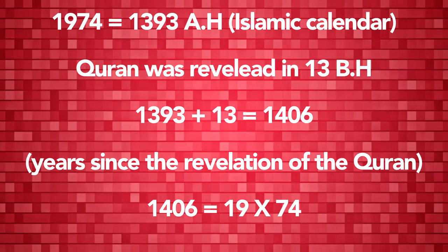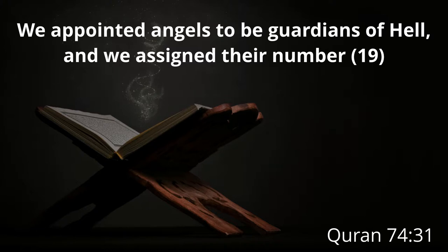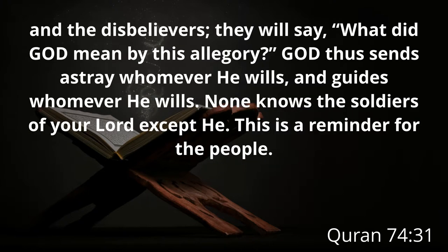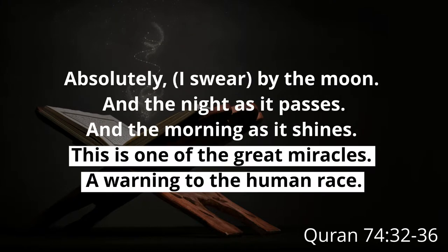God tells us in 74:31: 'We appointed angels to be guardians of hell and we assigned their number 19.' Then five reasons are given: (1) to disturb the disbelievers; (2) to convince the Christians and Jews that this is the divine scripture; (3) to strengthen the faith of the faithful; (4) to remove all traces of doubt from the hearts of Christians, Jews, and believers; and (5) to expose those who harbor doubts in their hearts. The verse also says: 'This is one of the great miracles, a warning to the human race.'